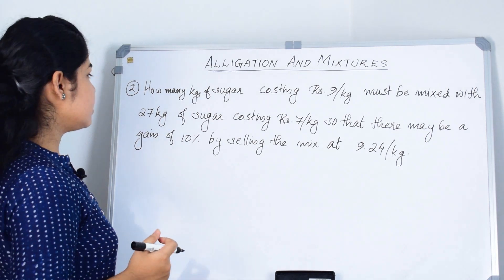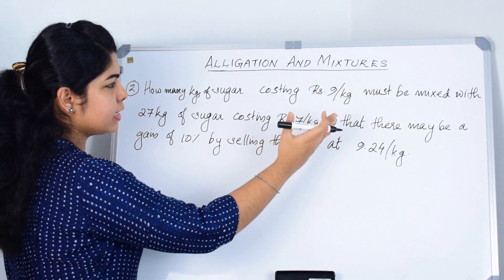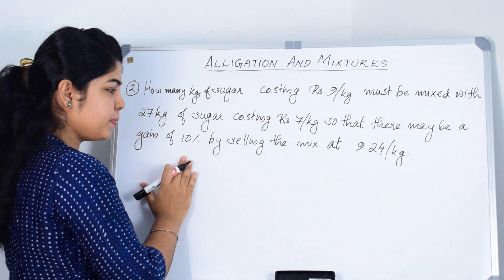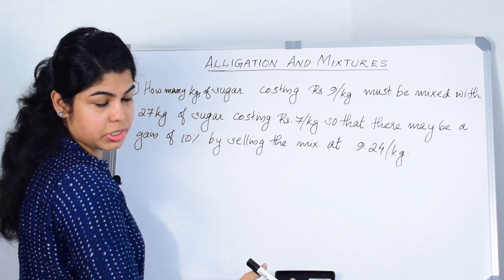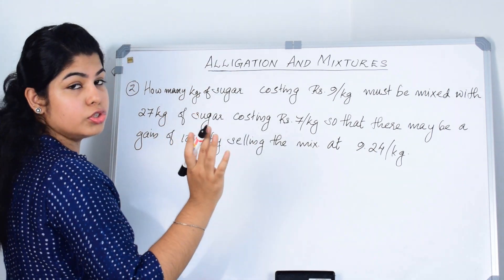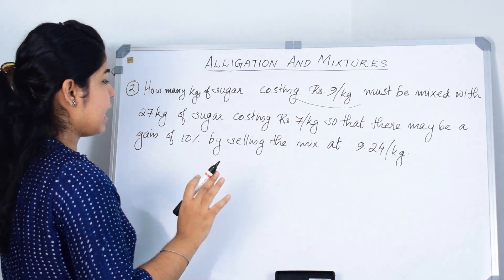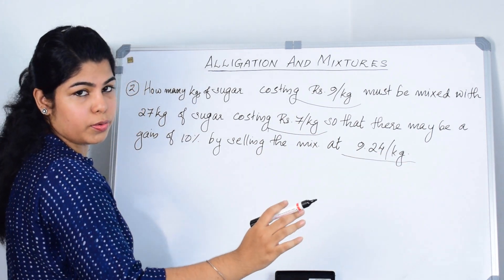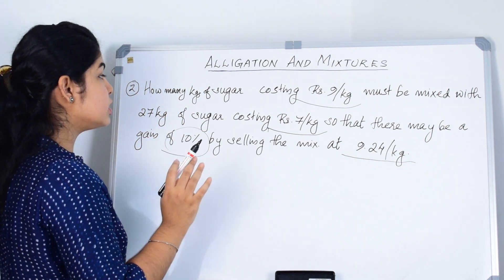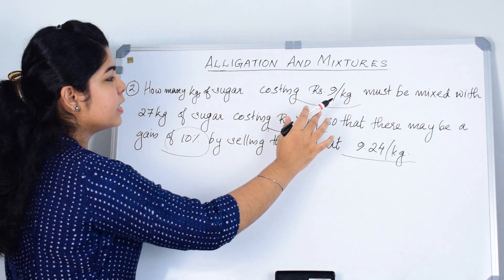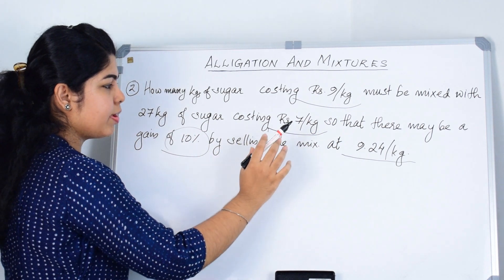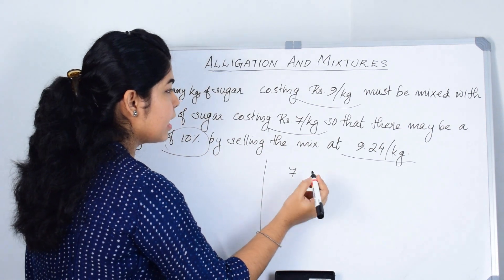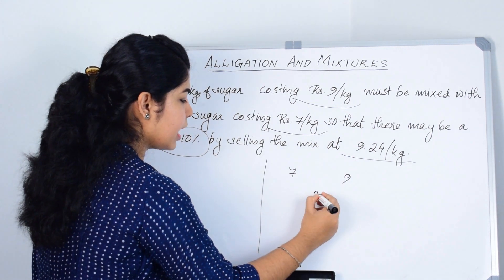Now let us solve our second question. How many kilograms of sugar costing Rs. 9 per kg must be mixed with 27 kilograms of sugar costing Rs. 7 per kg, so that there may be a gain of 10% by selling the mixture at Rs. 9.24 per kg? The cheaper price is 7 and the dearer price is 9. We need to find the mean price. The given value is the selling price and the gain is 10%.